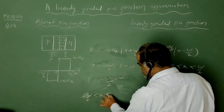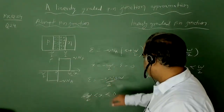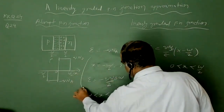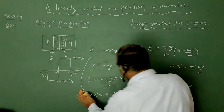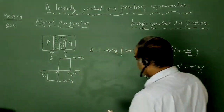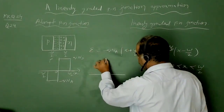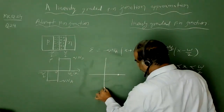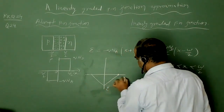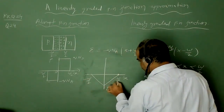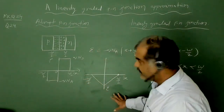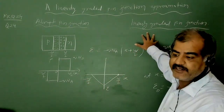So this is my value of electric field for the region −W/2 to 0. Now I want to draw this. The electric field is 0 at x = −W/2, maximum at x = 0, and returns to 0 at x = +W/2. This is the electric field profile for the abrupt pn junction. Now in the question they have given a linearly graded pn junction.